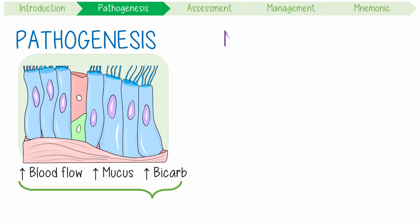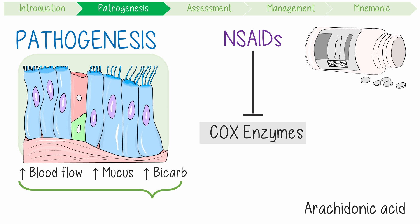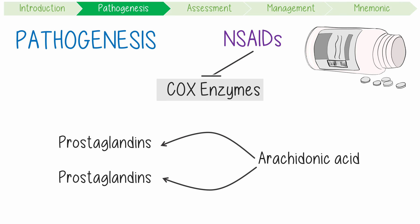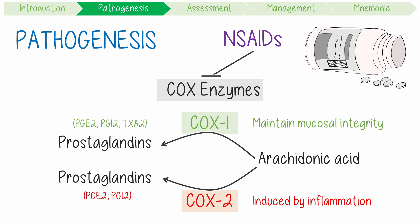NSAIDs increase the risk of PUD by inhibiting COX enzymes. These convert arachidonic acid into prostaglandins through two main pathways: COX-1, which is always working to maintain gastric mucosal integrity, and COX-2, which turns on in response to inflammation. The anti-inflammatory action of NSAIDs comes from inhibiting COX-2, but the negative effects come from stopping the gastroprotective function of COX-1.